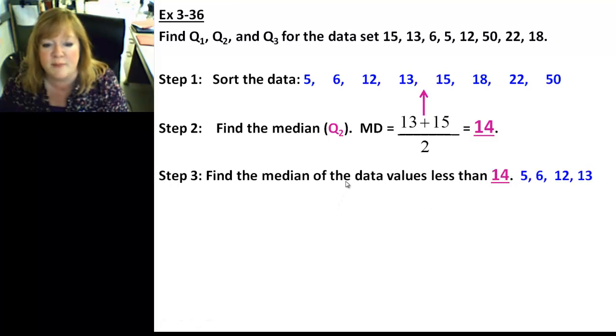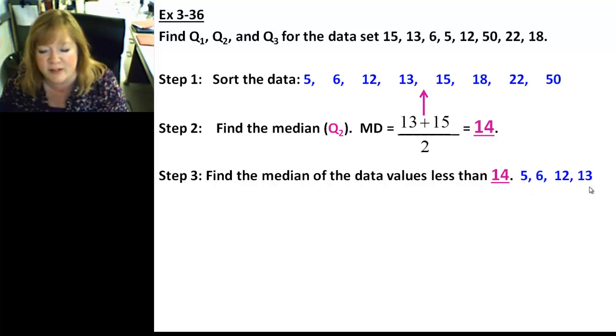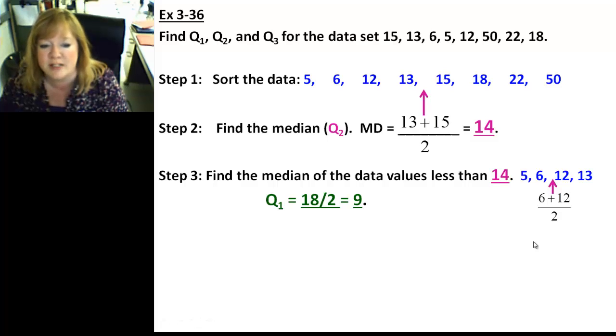Step 3, find the median of the data values less than 14. So, if you look, here's the data values less than 14. 5, 6, 12, and 13. And, I wrote them over here for you. Of course, it's an even number again. So, we're going to be looking for that value that's halfway between 6 and 12. 6 plus 12 is 18. 18 over 2 is 9. So, that's Q1.